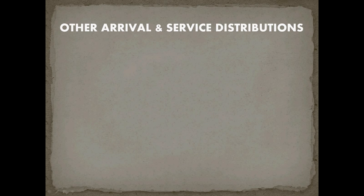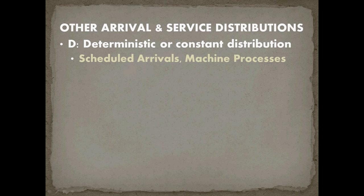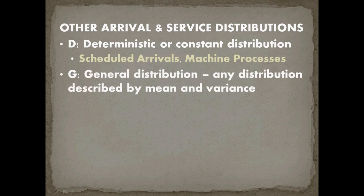Other arrival and service distributions the analytic model can cover include deterministic models, where arrivals are scheduled or service is provided by a machine process taking an exact amount of time every single time. Alternatively, general distributions — any distribution with a mean and variance, such as normal or gamma distributions — can also be modeled by our analytic models.